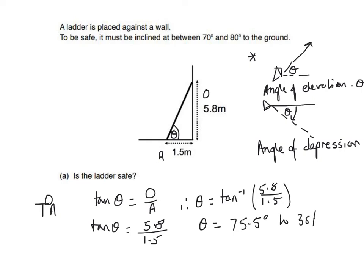So yes — the ladder is safe, as 75.5 degrees lies between 70 and 80 degrees.